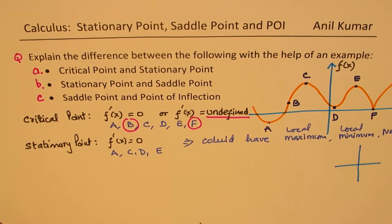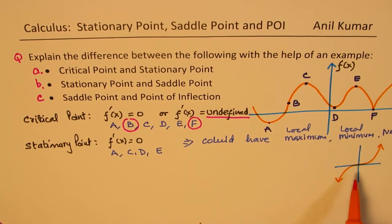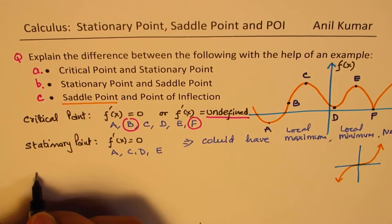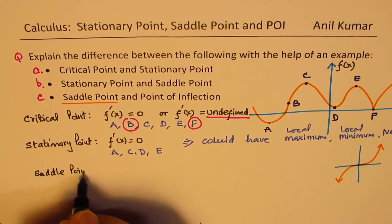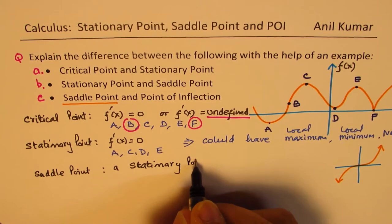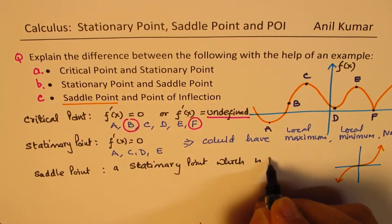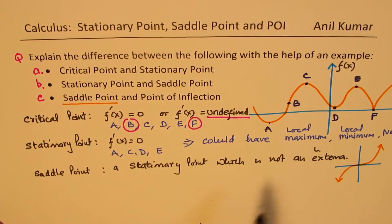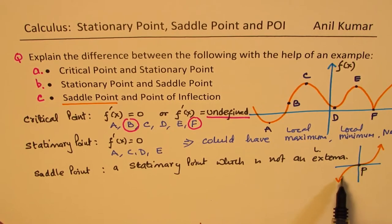Just to give you an example, let me sketch a curve like a cubic function. Here we do have a derivative which is zero, but we don't have a local maximum or minimum — and that is called the saddle point. So the saddle point basically is a stationary point which is not an extrema. Let's call this point P. You can see the shape of it like a saddle — that's how it gets its name.